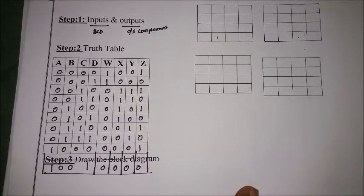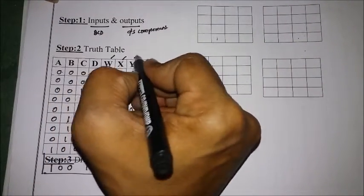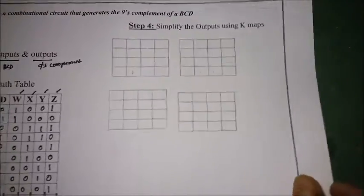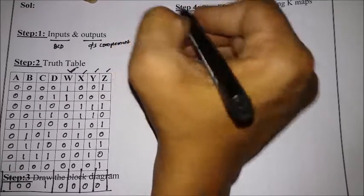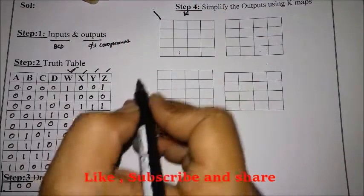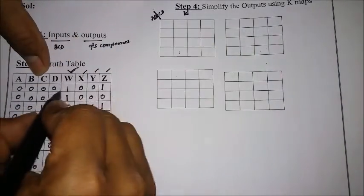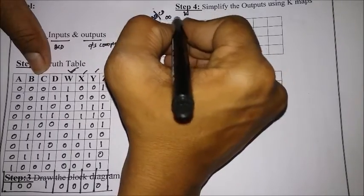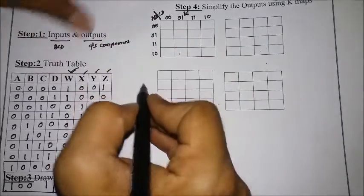After generating the truth table, I need to simplify the outputs W, X, Y, and Z using K-maps. Let us proceed with simplification of the output using K-maps. I will start with W. The inputs are four variables: A, B, C, D. For W, I am filling in the K-map with the values: zero, zero, zero, one, one, one, one, one, zero, zero, zero, zero, zero, one, one, one, one, zero.